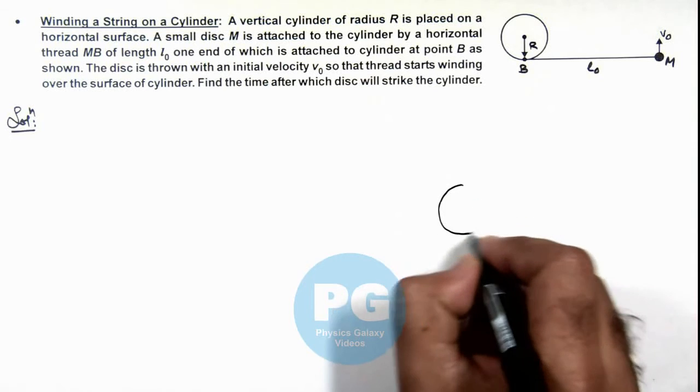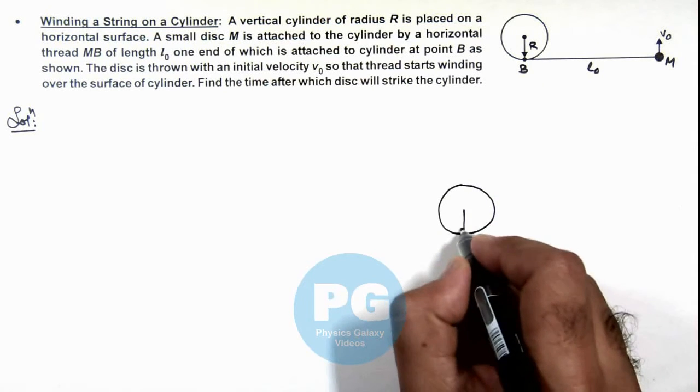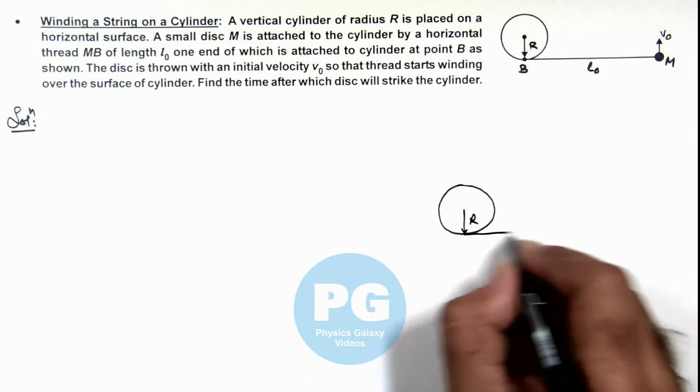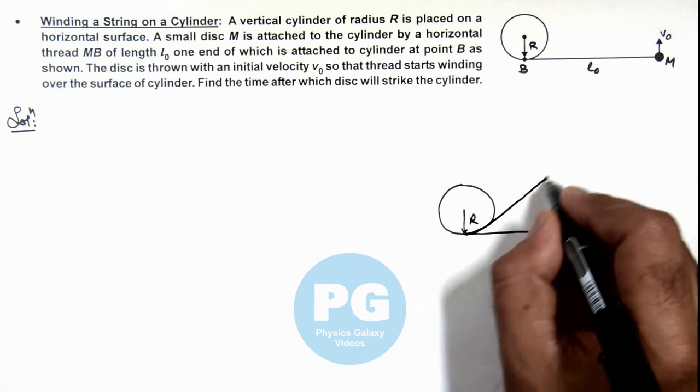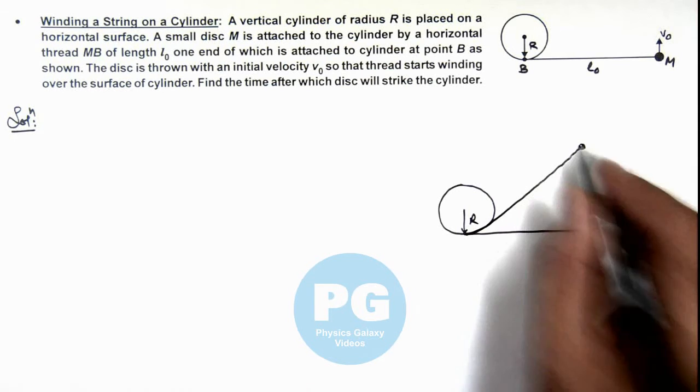Here I can draw the picture to understand. If this is the initial position of the disc, and say after time t, it reaches over here.